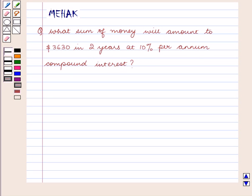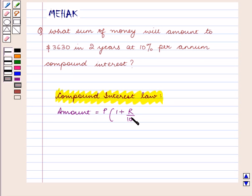The compound interest law is: Amount equals P times (1 plus R upon 100) raised to power N, where P is equal to the principal.